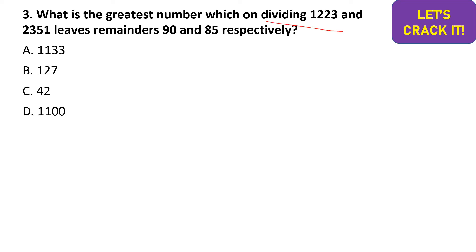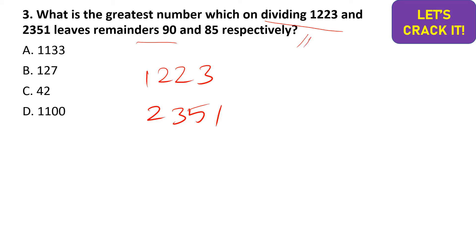The third question: what is the greatest number which, on dividing 1223 and 2351, leaves remainders 90 and 85 respectively? Whenever the question asks for the greatest such number, we think about HCF. The first number gives remainder 90 and the second gives 85, so we subtract: 1223 − 90 = 1133 and 2351 − 85 = 2266.